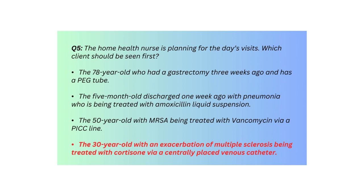Q5. The home health nurse is planning for the day's visits. Which client should be seen first? The 78-year-old who had a gastrectomy three weeks ago and has a PEG tube; the 5-month-old discharged one week ago with pneumonia being treated with amoxicillin liquid suspension; the 50-year-old with MRSA being treated with vancomycin via a PICC line; or the 30-year-old with an exacerbation of multiple sclerosis being treated with cortisone via a centrally placed venous catheter.